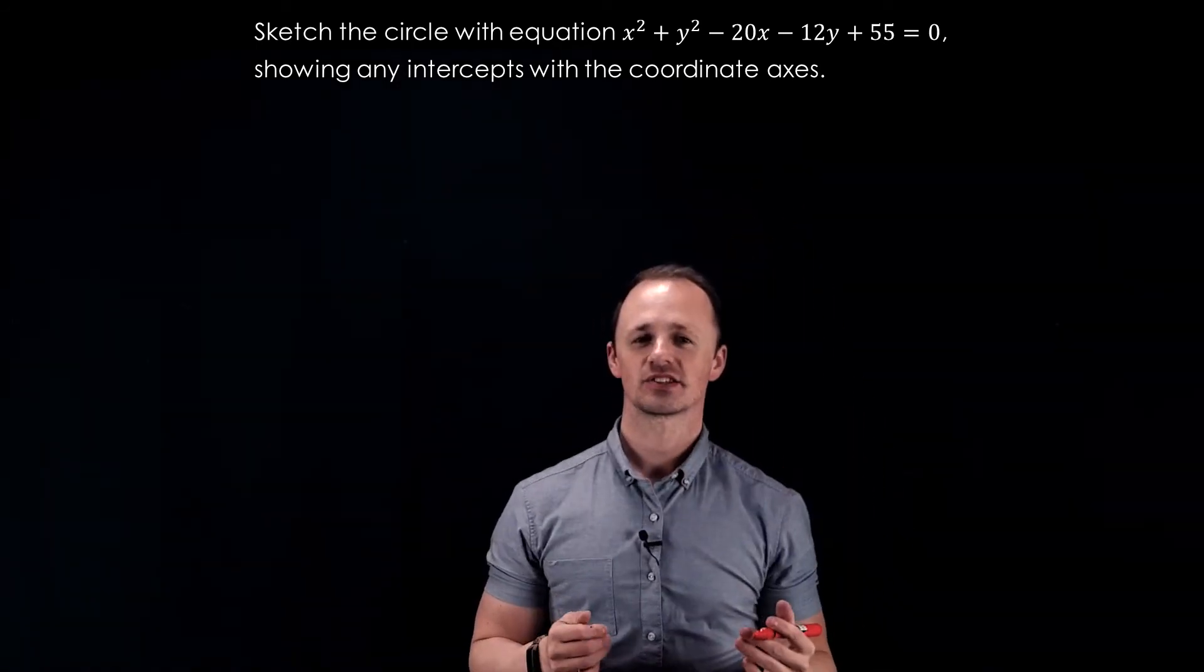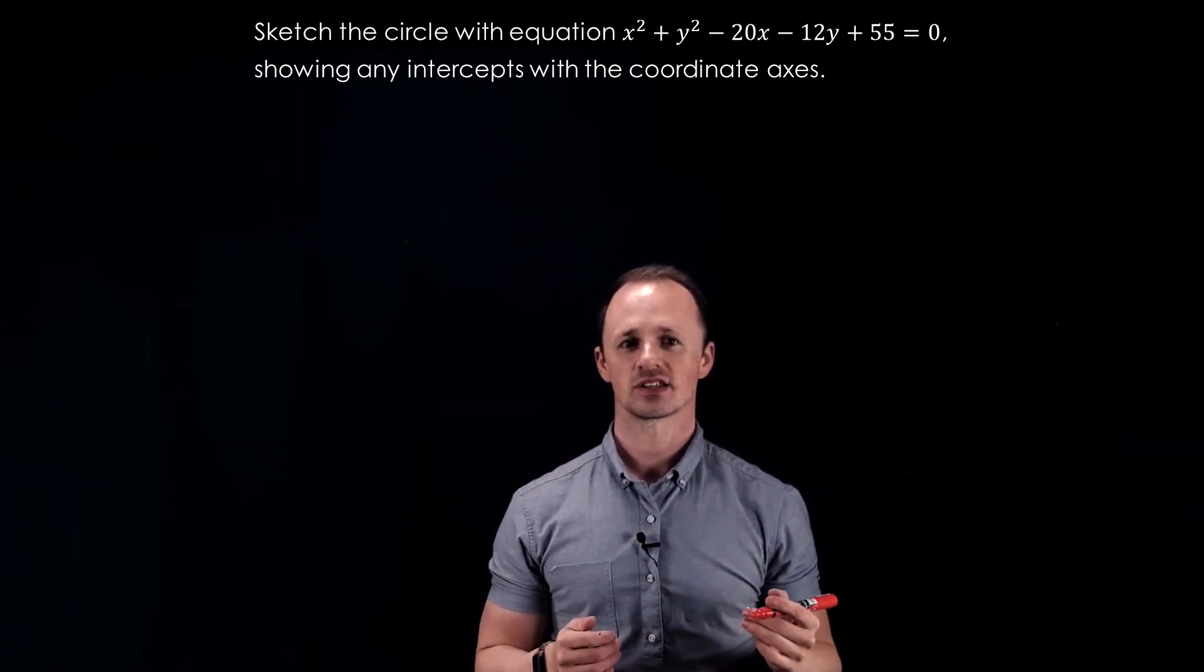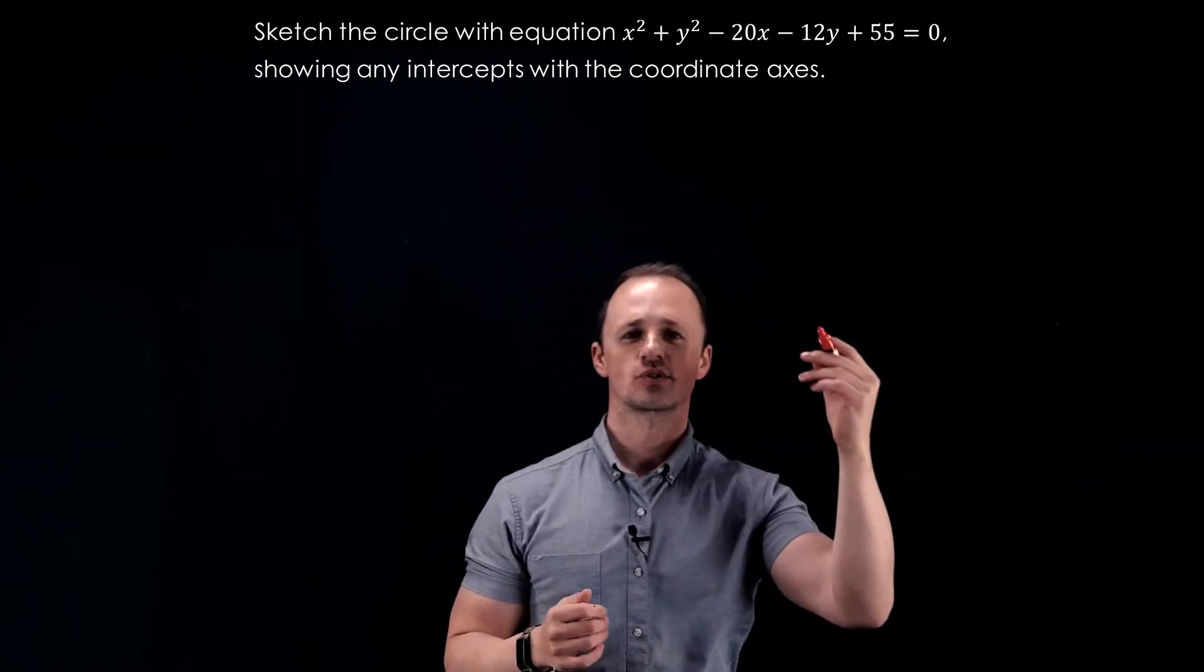Okay, in this example, we're going to sketch the circle with this equation, showing any intersections with the coordinate axes. So again, let's complete the square to start off with.